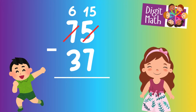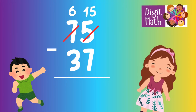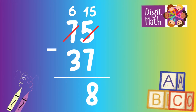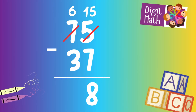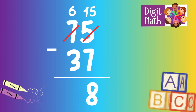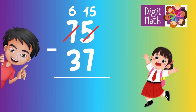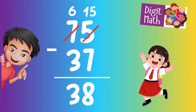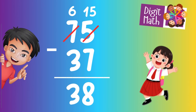Now we have 15 in the Units column. Subtract 7 from 15, which equals 8. In the Tens column, we now have 6. Subtract 3 from 6, which equals 3. So the final result is 75 minus 37 equals 38.